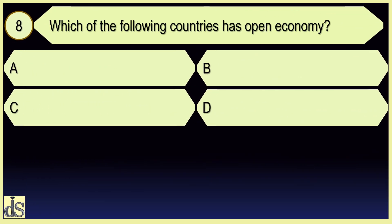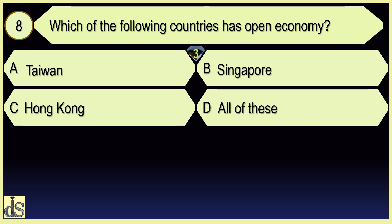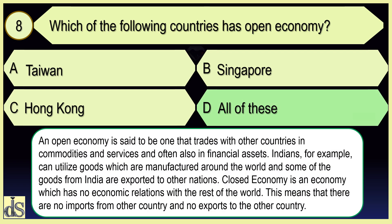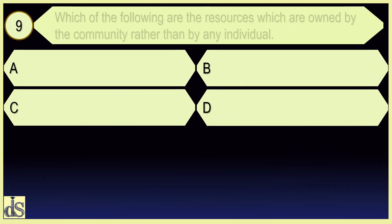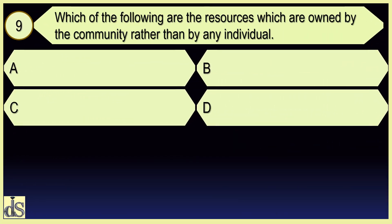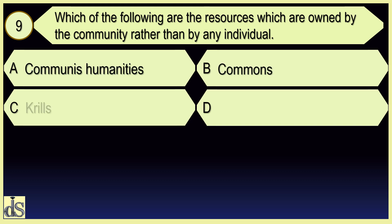Which of the following countries has an open economy? All of these. Which of the following are the resources owned by the community rather than by any individual? Commons.